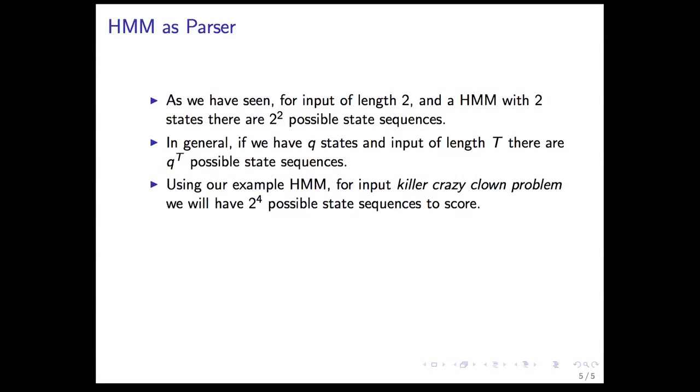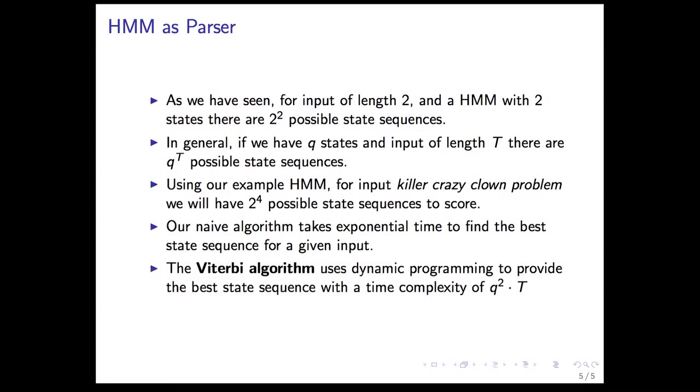So if you have a larger input with 4 symbols, killer crazy clown problem, we have 2 to the 4 possible state sequences to score, because now we have 4 observation sequences, 4 symbols in our input. So that's not very good. Our naive algorithm is taking exponential time to find the best state sequence. And it turns out we can do better.